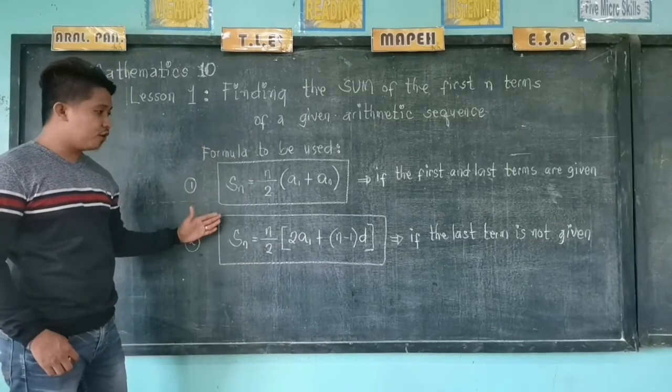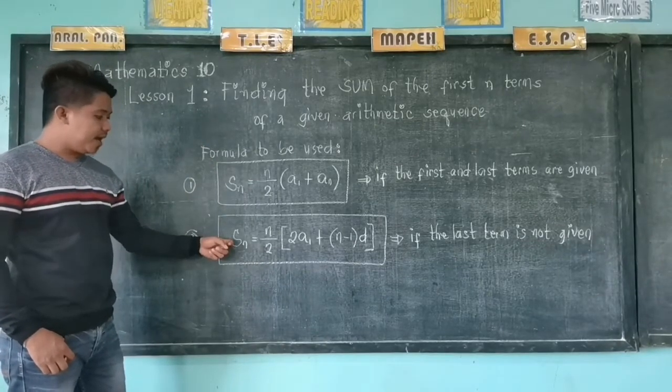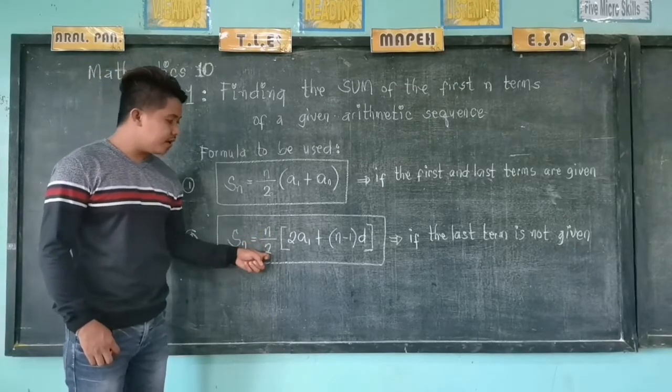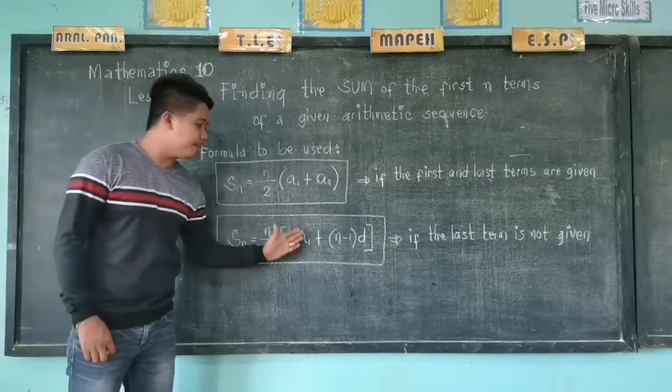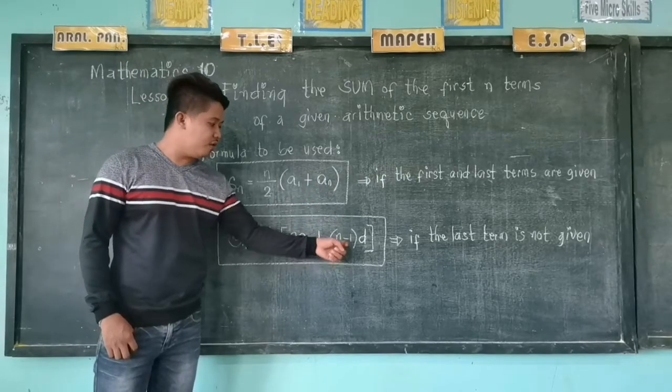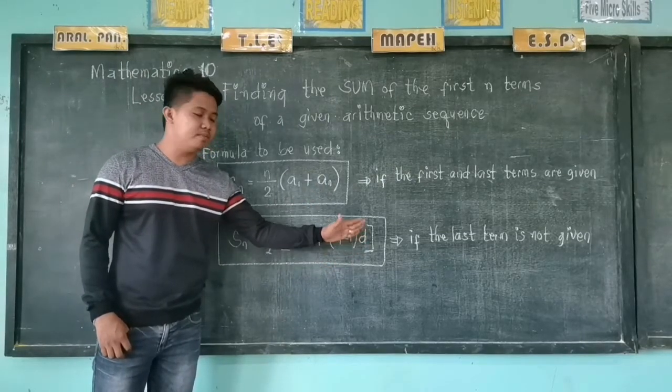Now we have the second formula. S sub n, which is equal to n over 2 times the sum of 2 a sub 1, and the quantity of n minus 1 times d.